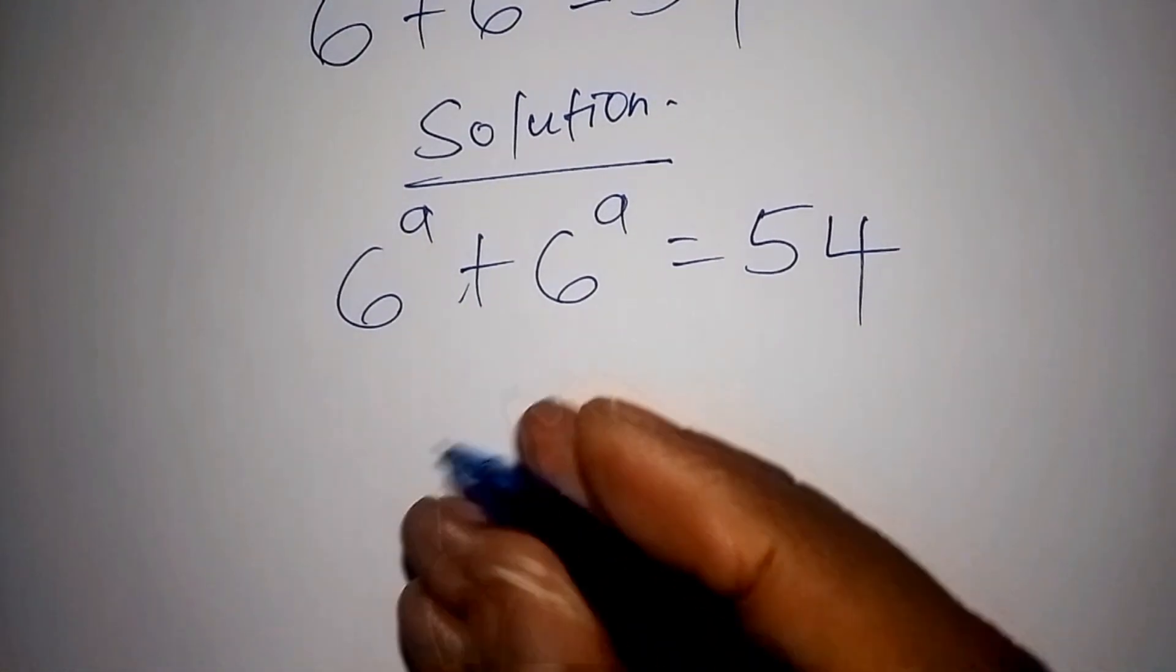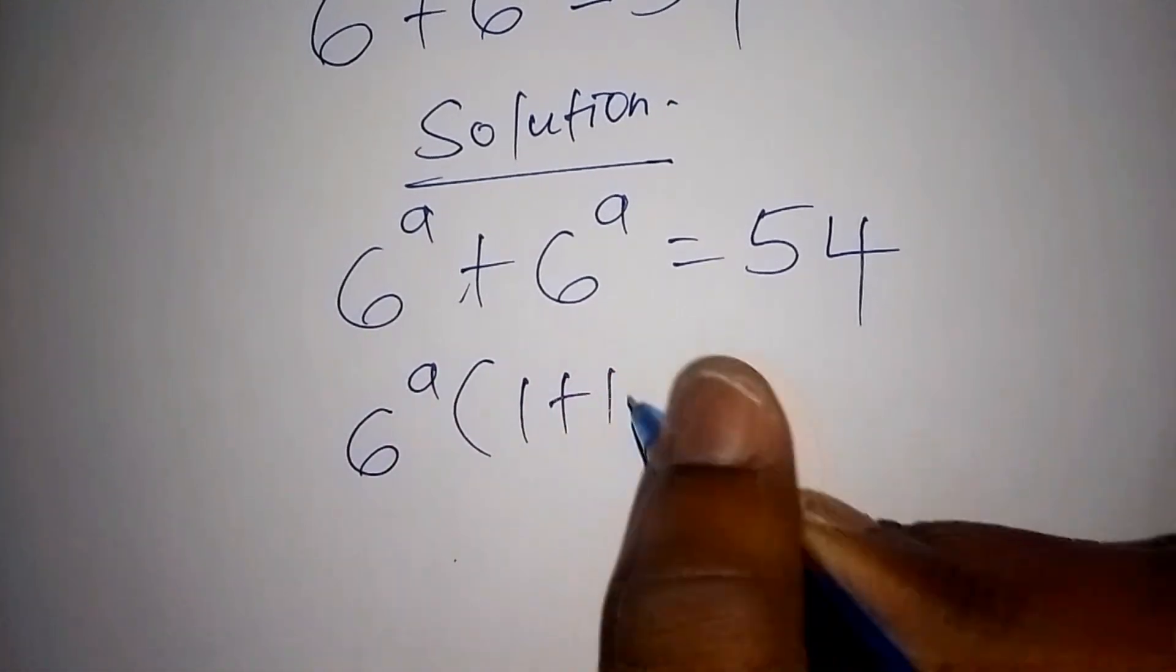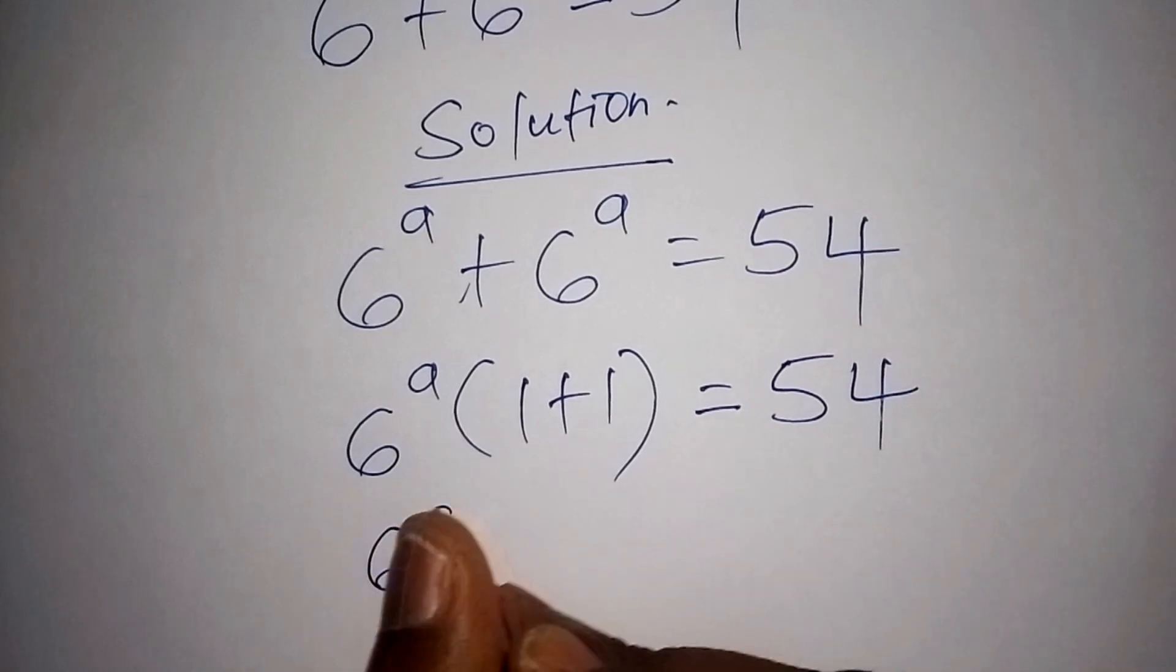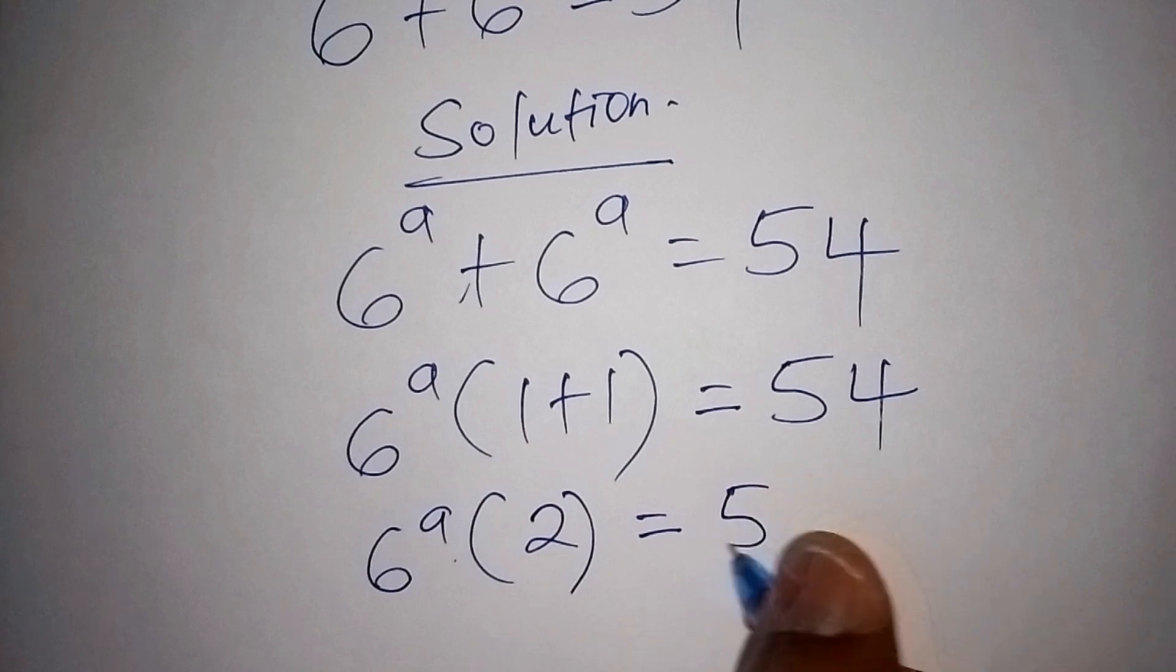So in this case we shall have 6 to the power of a into bracket 1 plus 1, close the bracket equals 54. Then we shall work out the number inside the bracket, that is 1 plus 1, that is 2, equals 54.